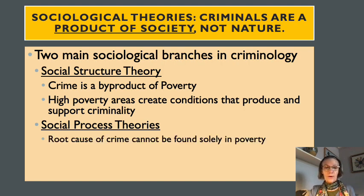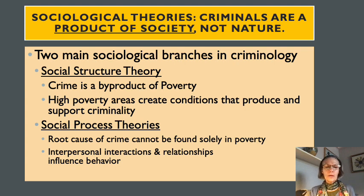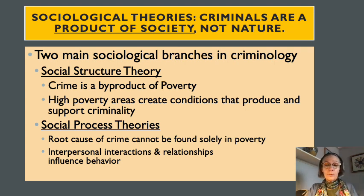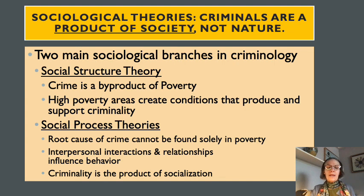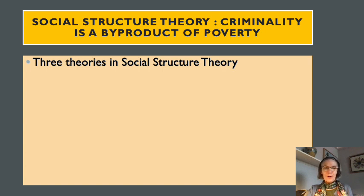One branch is the social structure theory, which focuses on poverty. It argues that crime is a byproduct of poverty — that high-poverty areas create conditions that produce and support criminality. The other branch is the social process theories, which argue that the root cause of crime cannot be found solely in poverty, since many people raised in poverty do not engage in criminal behavior. Social process theories argue that interpersonal interaction and relationships — the social processes humans engage in — influence behavior, and that criminality is a product of socialization.